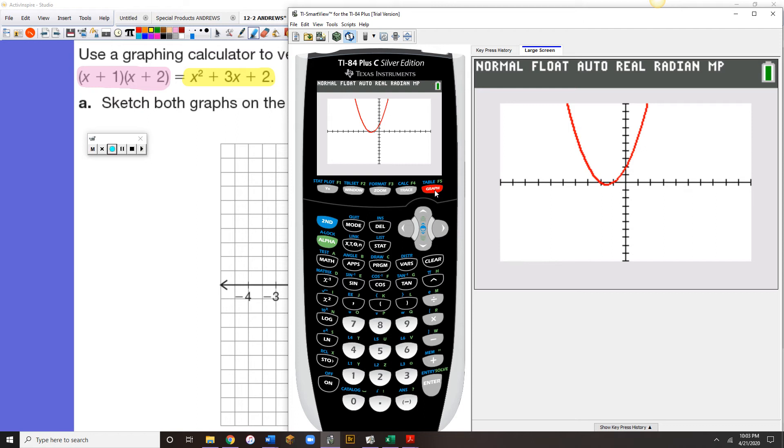So when I run the graph, the blue graph comes in, that's the factored form, and then the red graph comes in right over top of it, that is the standard form.